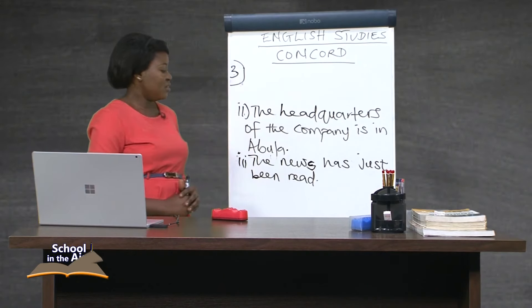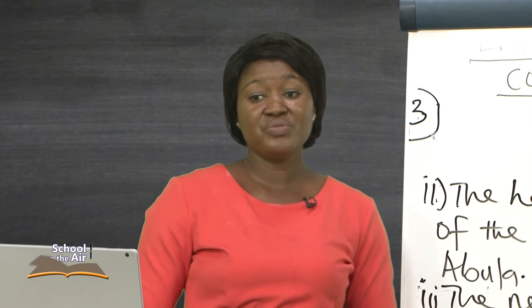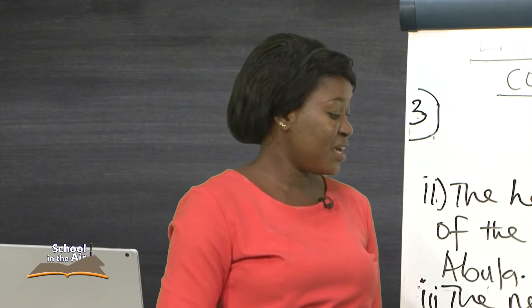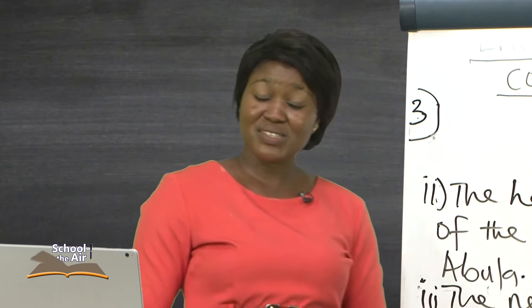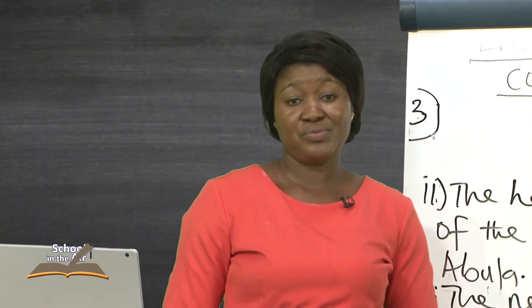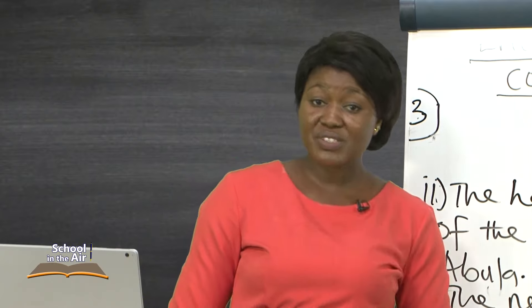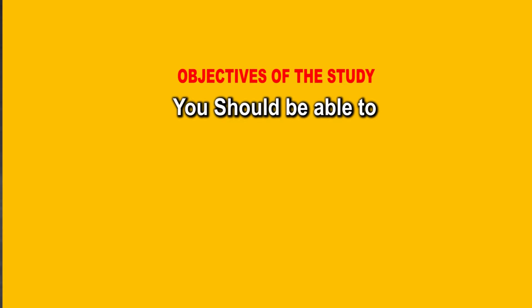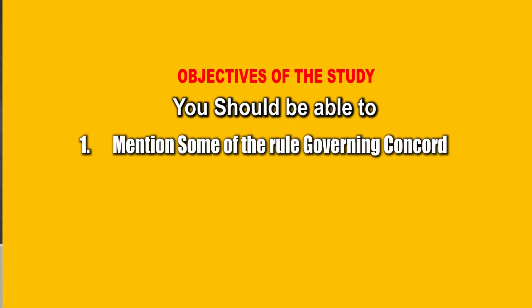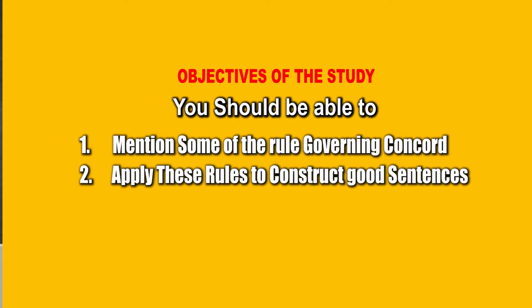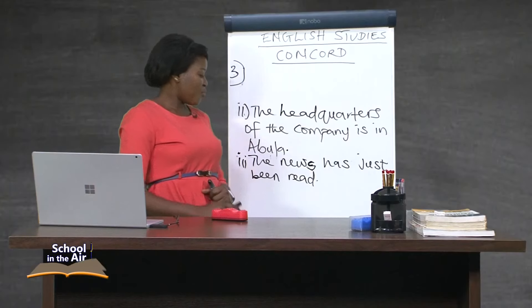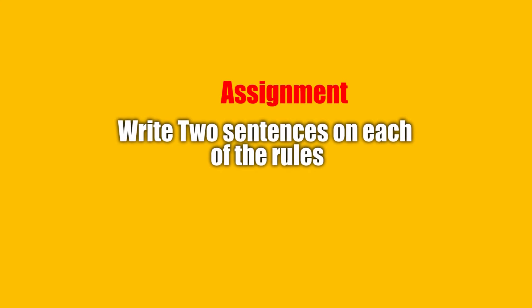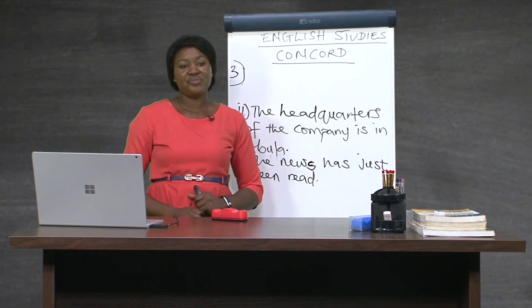On this note, we will stop today and continue the rules in our next edition. From our lesson today, I'm sure you have learned what Concord is — rule one: singular subject takes singular verb; rule two: plural subject takes plural verb; rule three: nouns plural in form but singular in meaning take singular verbs. For the next class, write two sentences on each of these rules. Thank you, God bless.